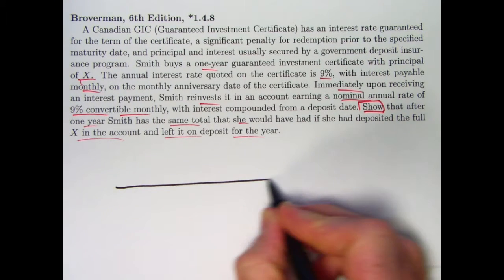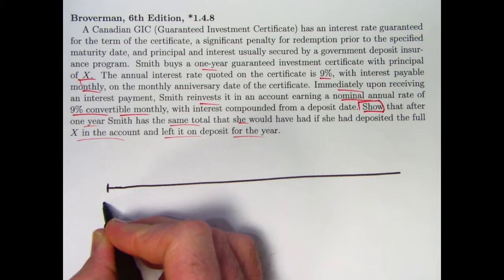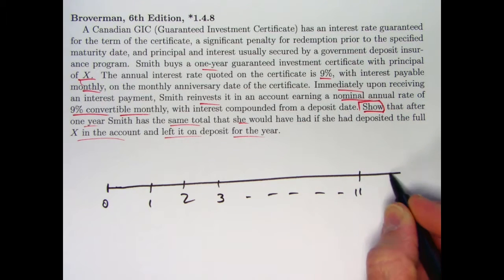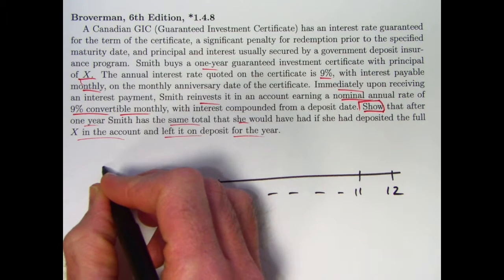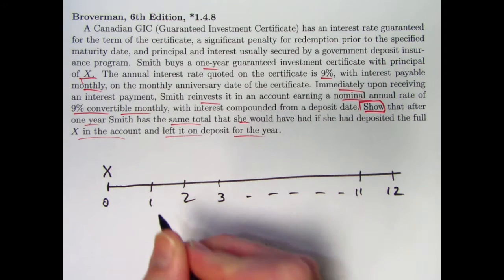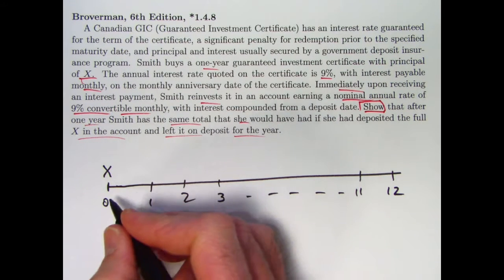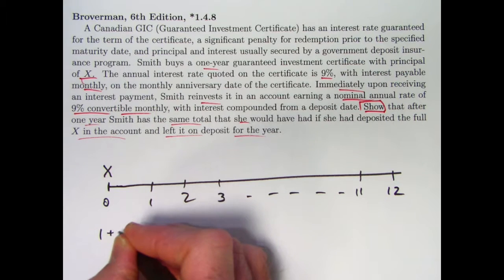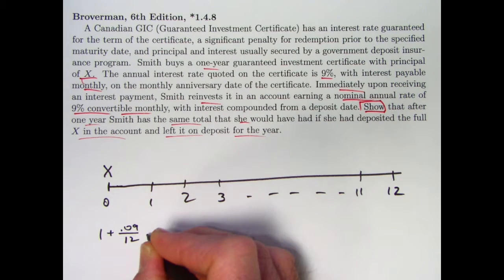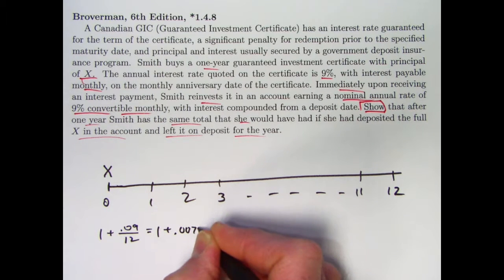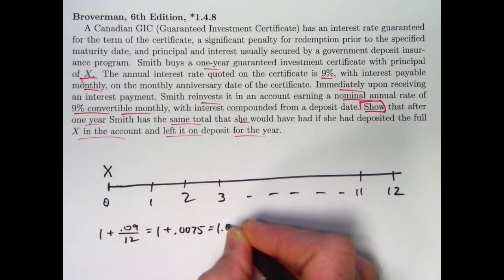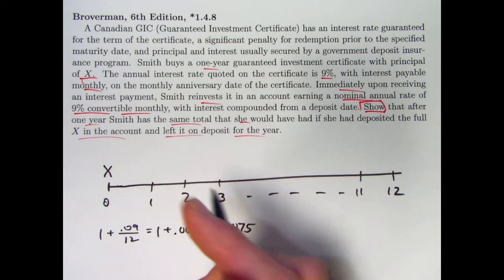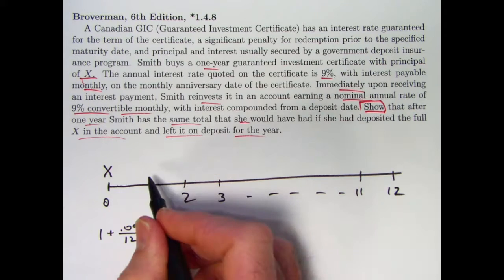Let's draw a number line. Here's time 0, time 1, time 2, these are in months, and we are doing this for one year. You've got your initial investment X. After one month has gone by, X has grown to X times 1 plus 0.09 divided by 12. 0.09 divided by 12 is 0.0075. 1.0075 is the monthly growth factor. So you'd have 1.0075 times X amount at time 1.